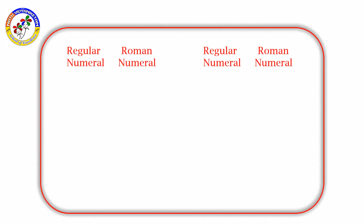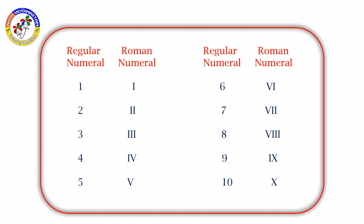So, here is the regular numeral alongside the Roman numeral. Let us see: 1, 2, 3, 4, 5, 6, 7, 8, 9, 10.